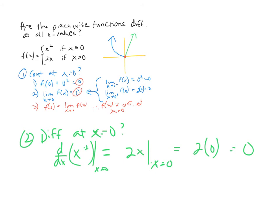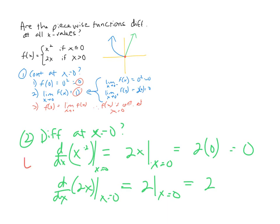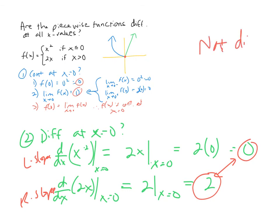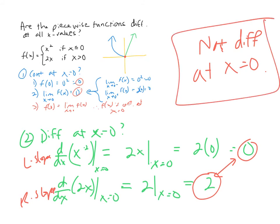The derivative of the right-hand piece, 2x, is just 2. So at x equals zero, the slope from the right is 2. Comparing: the left-hand slope is 0 and the right-hand slope is 2 — they are not equal. That means it's never going to be smooth at that point; there's a corner. Therefore, f(x) is not differentiable at x equals zero.